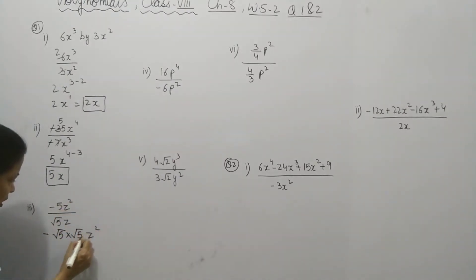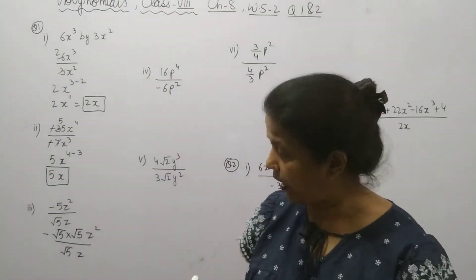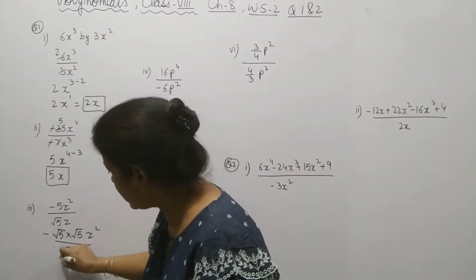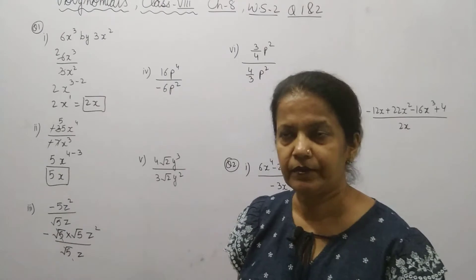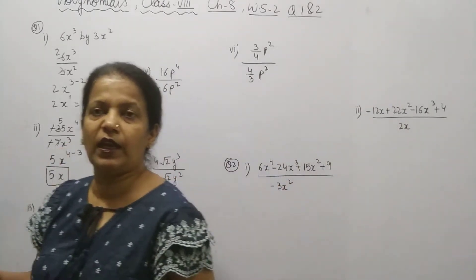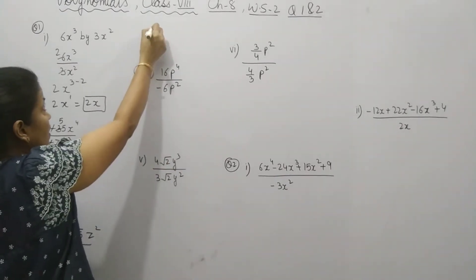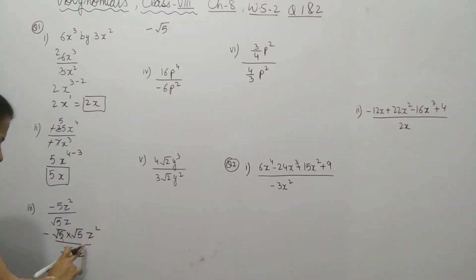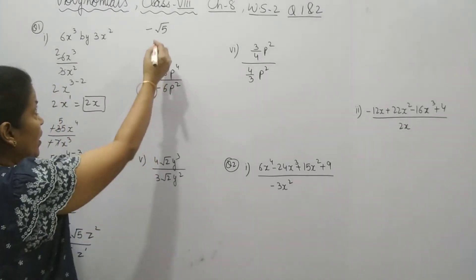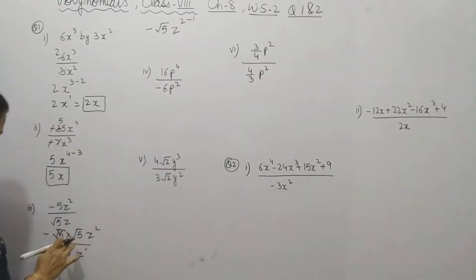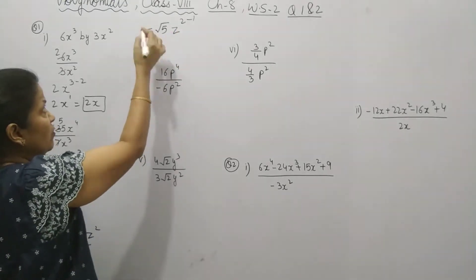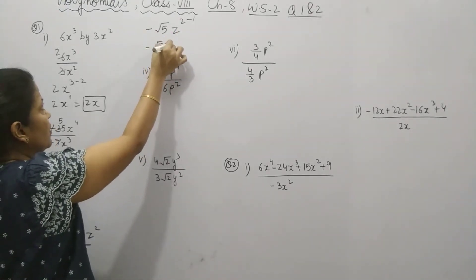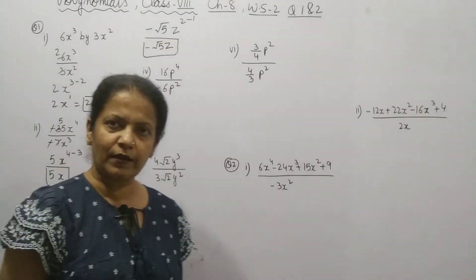And the denominator is root 5. So now we can cancel root 5 with root 5. The remaining terms will be minus root 5. And for z: bases are same but it is in division form, so it becomes z power 2 minus 1. Since 2 minus 1 is 1, the answer is minus root 5 · z.